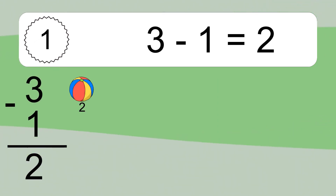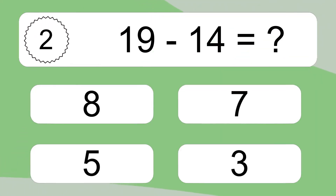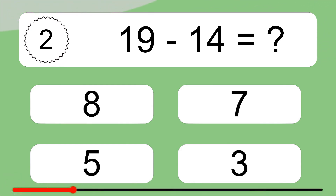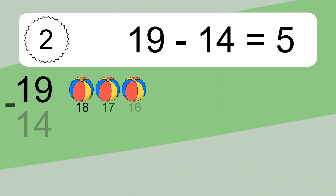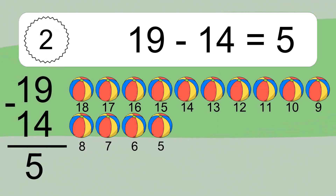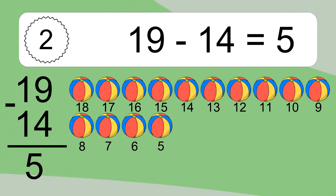Let's count it. 19 minus 14 equals what? 19 minus 14 equals 5. Let's count it: 18, 17, 16, 15, 14, 13, 12, 11, 10, 9, 8, 7, 6, 5.